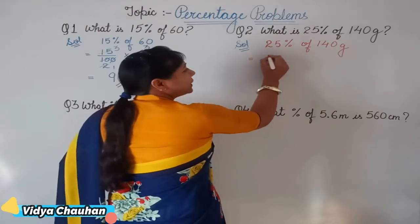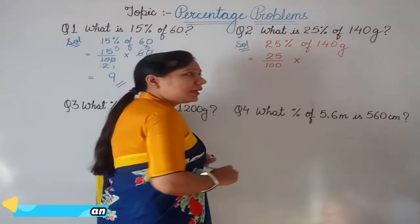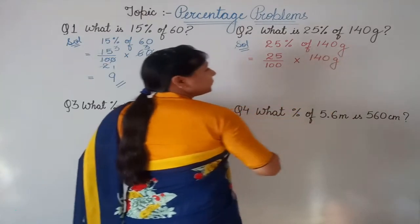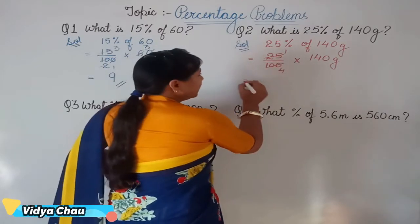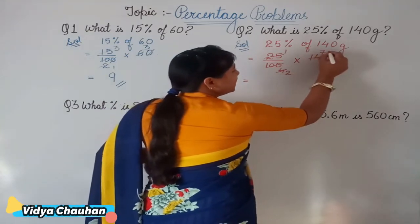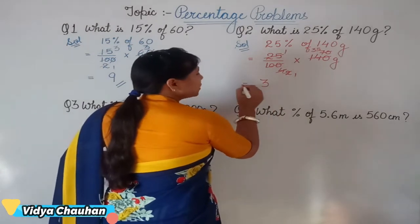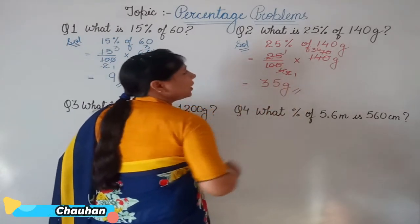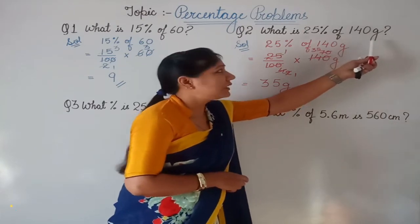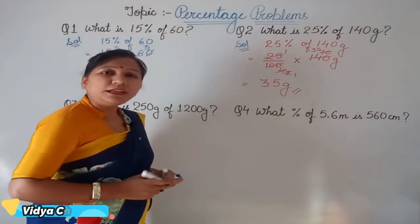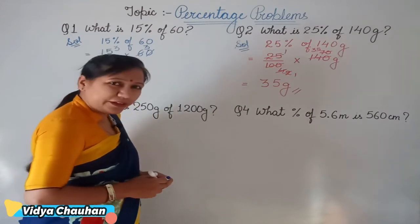Convert the percentage to a fraction: it becomes 25 upon 100, with a multiplication sign in place of 'of', then multiplied by 140 grams. Simplifying: dividing by 25 gives 4, then simplifying by 2 gives 70, and again by 2 gives 35. So the value equals 35 grams — 25 percent of 140 grams is 35 grams.